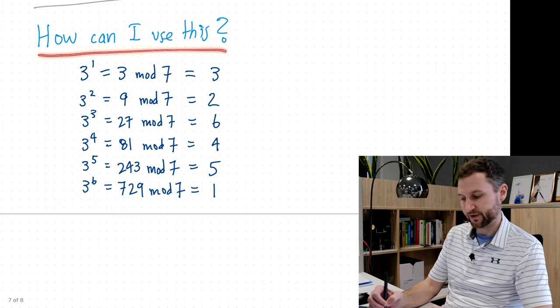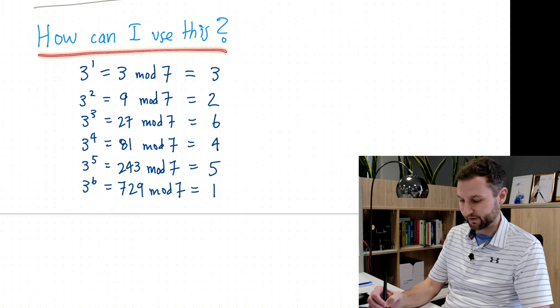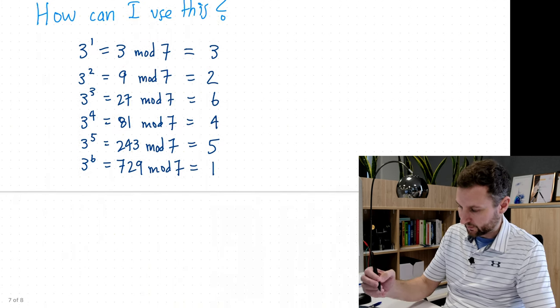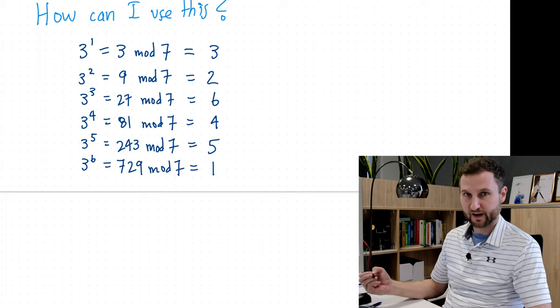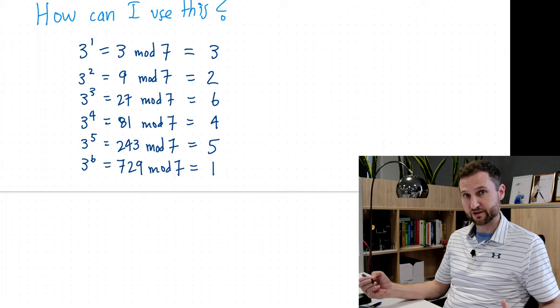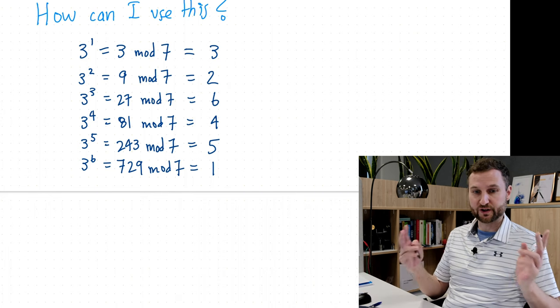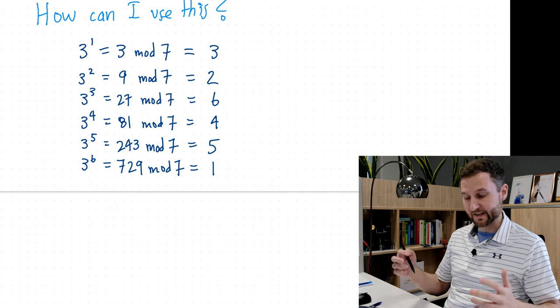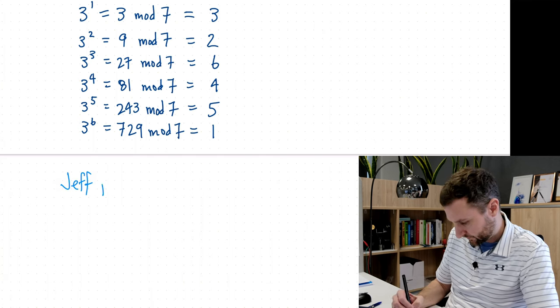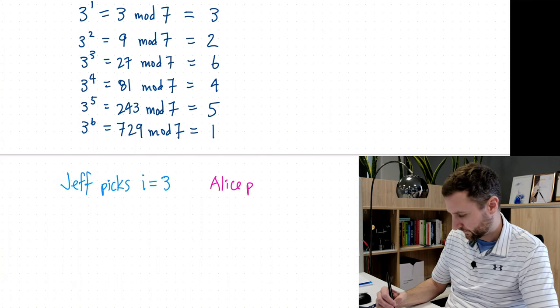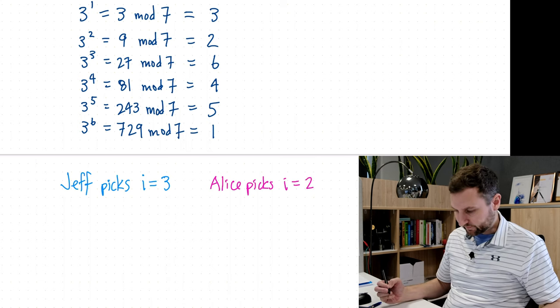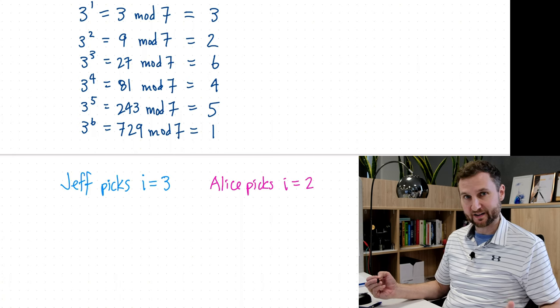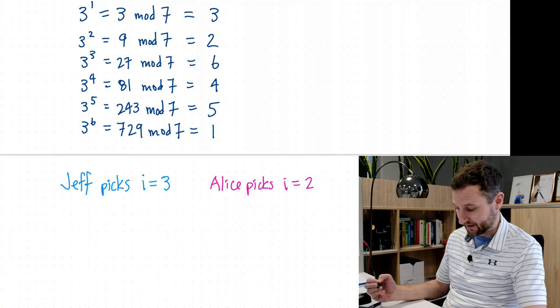Okay, so the obvious question comes up next, which is how can I use this? What can I do with it? I've got the same table here as we had before. What I'm going to do is set this up so that we have two people, and we're each going to do a calculation, then we're going to exchange numbers that we calculate, and that's going to be the basis for an encryption key. So I'm going to start by picking a number, I'm going to pick i equals 3 as my exponent, and Alice, who I'm going to swap with, is going to pick i equals 2.